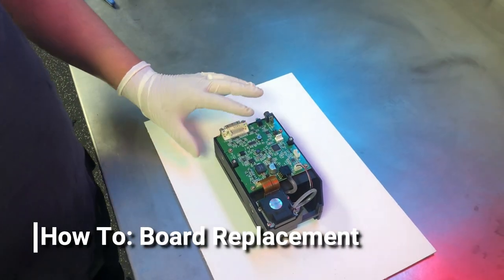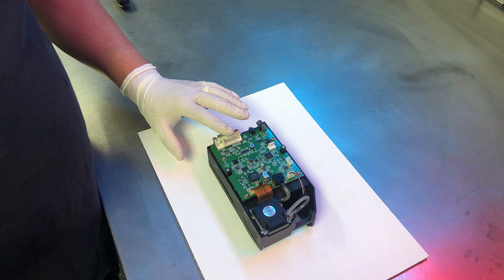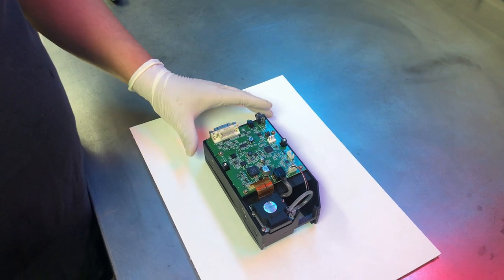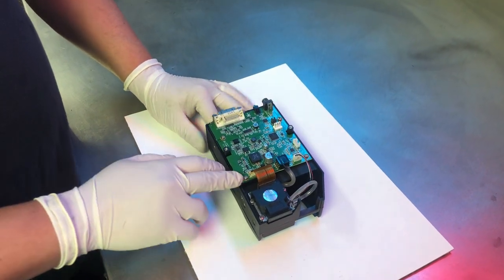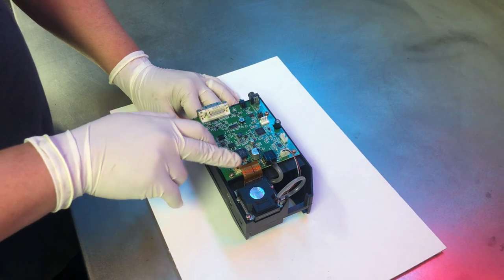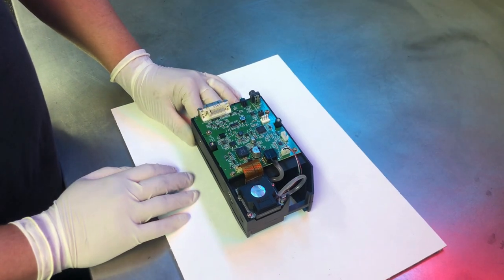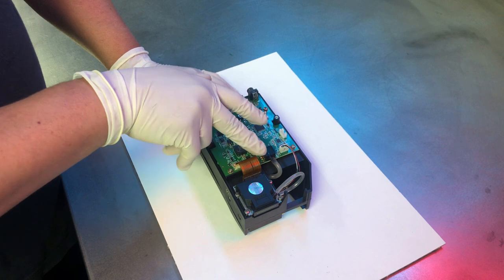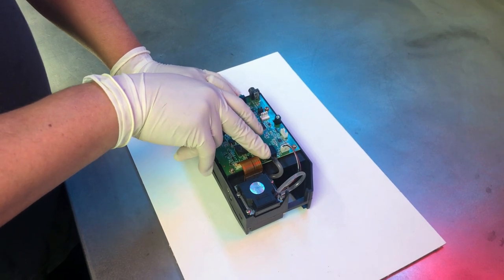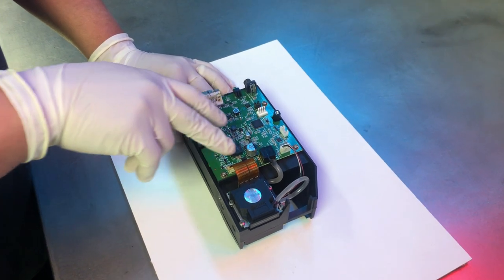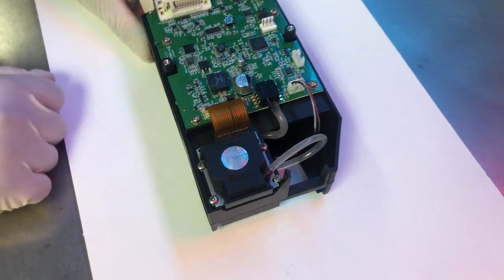Now we're going to be doing a Co-Pilot 128A board replacement. Before we start unscrewing the screws here, we're going to want to make sure we loosen up the other things that are connected to the board. We've got our stepper motor, our vacuum line that's connected to our vacuum sensor, and our print engine data cable.